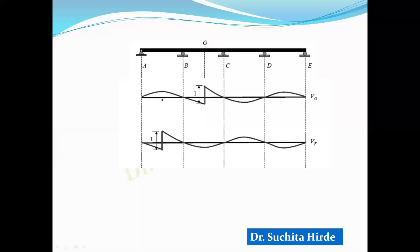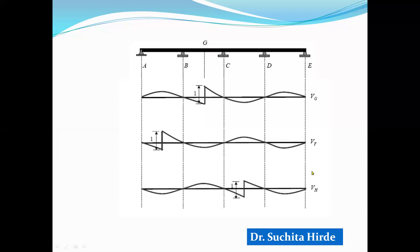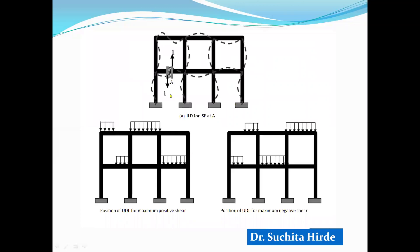The same logic applies to continuous and indeterminate beams. Cut the beam at the desired location and apply forces in the direction of the shear force — the resulting deflected shape is the influence line diagram for shear force at that section. Qualitative influence line diagrams can also be drawn for portal frames in a similar manner, to decide the position of the moving load to get the maximum value of that function.